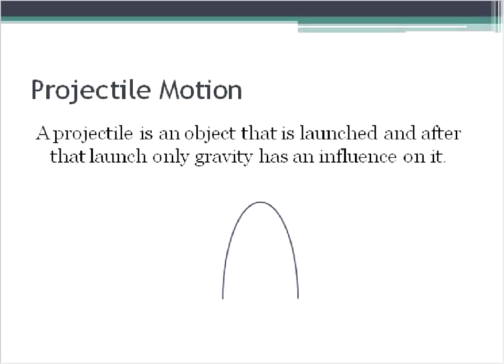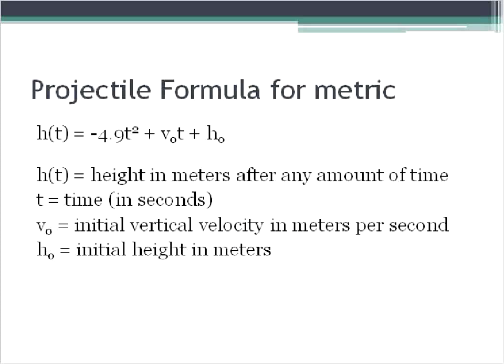Essentially what projectile motion is, is the idea that whatever goes up must come down. When we project an object up into the air, it's launched, and after it's launched, only gravity has an influence on it. So it may keep going up for a while, but eventually it will come down, and there are actually equations that we use to detect how long it's going to take to go up and down.